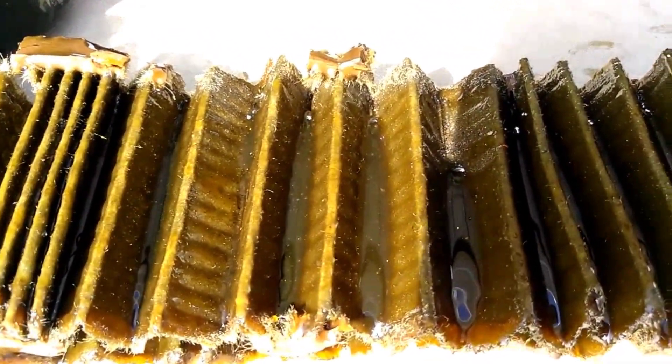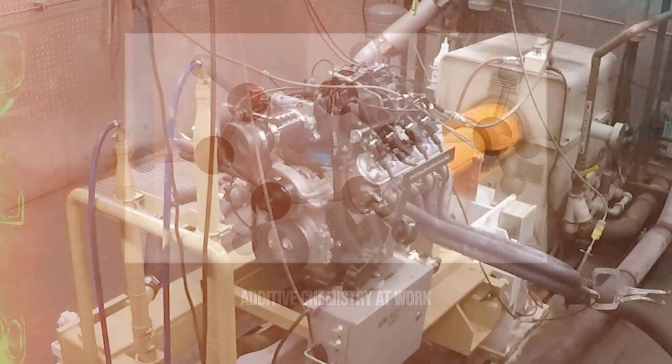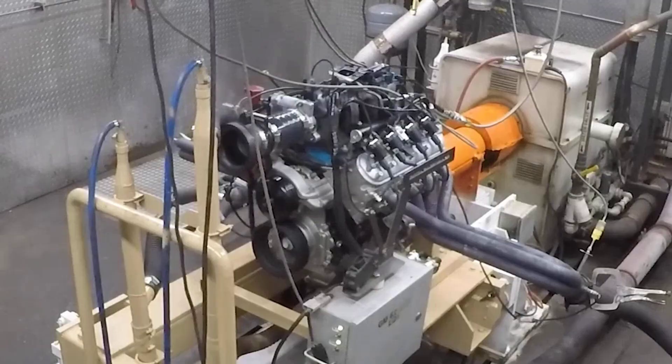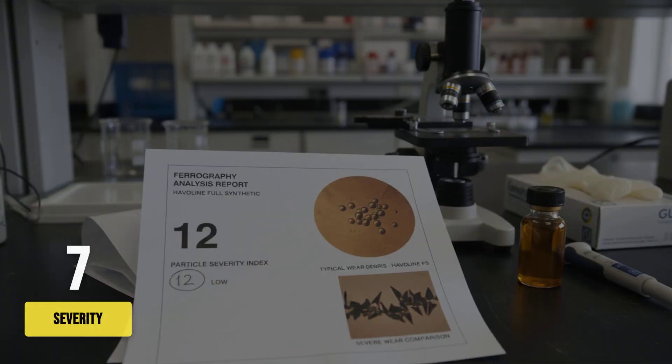The difference is more than academic. Large jagged particles can gouge bearings and shorten engine life, while smaller, well suspended particles are safely carried to the filter and removed.